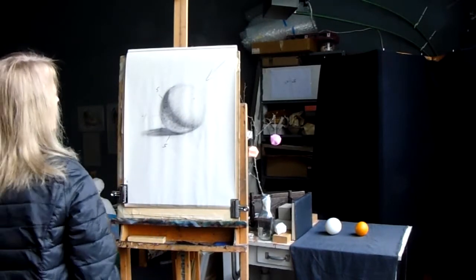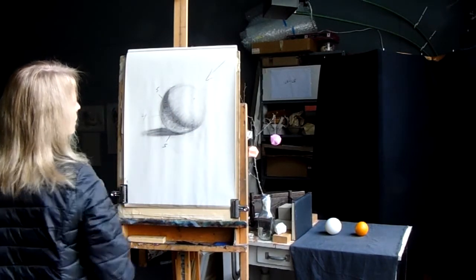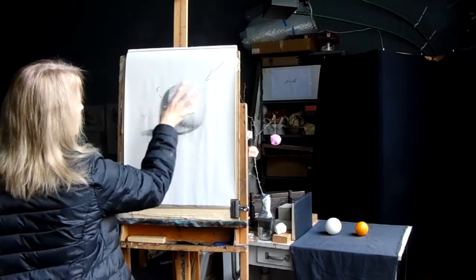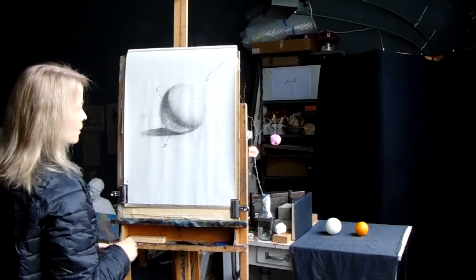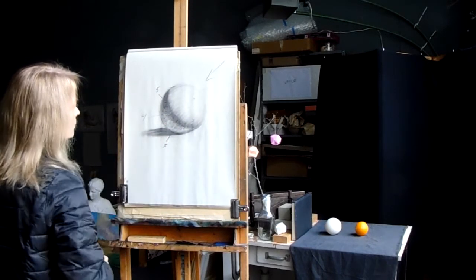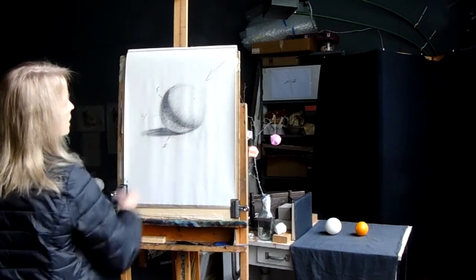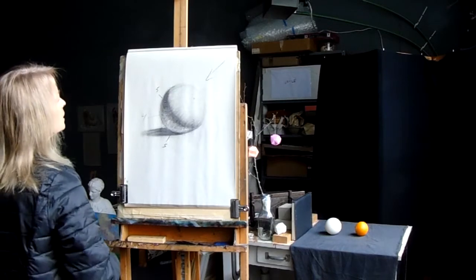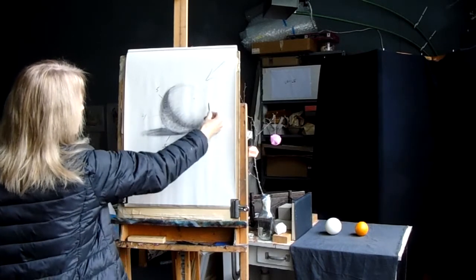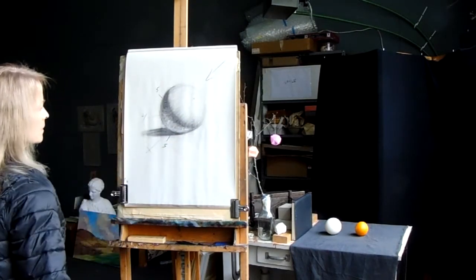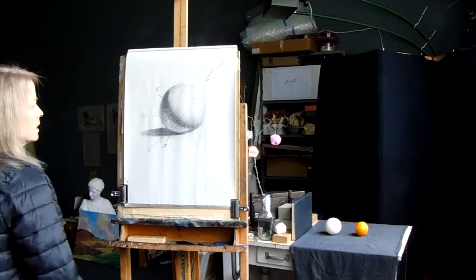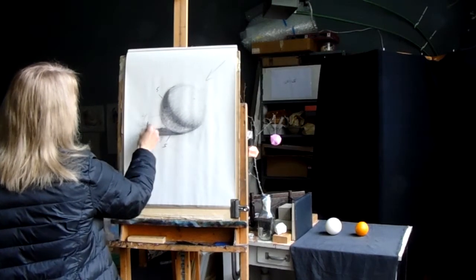So this darker area here is called the shadow edge. This area here is called the cast shadow because it's a shadow that's actually cast by the object itself and it'll mimic the shape of the object in a foreshortened form. This lighter area is called the reflected light. And the reason it's called reflected light is as the light comes down, it hits the ball. It also goes past the ball here and hits here and then bounces back up onto the object. And that's called reflected light.